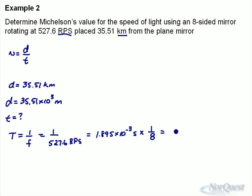And you get 2.37 times 10 to the negative 4 seconds. So there's the time it takes to go 35.51 kilometers and back. When you're given the rotational speed, you convert that to a time for the partial rotation that it goes through.